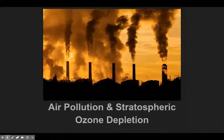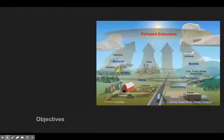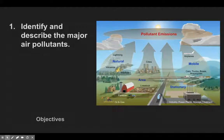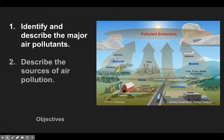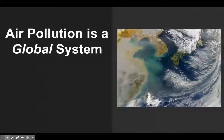Welcome to another AP environmental science lecture. We're going to kick off our air pollution chapter, looking specifically at the types of air pollutants and then stratospheric ozone depletion. Today the whole goal is to identify and describe the major pollutants and then describe the sources where these air pollutants are coming from.